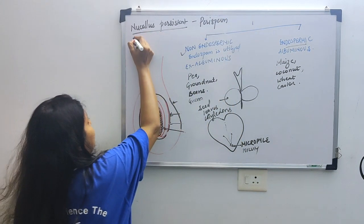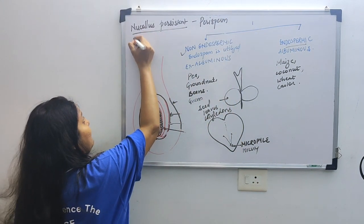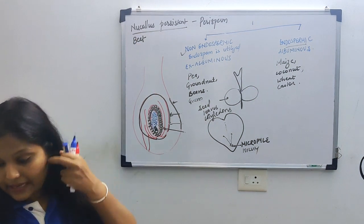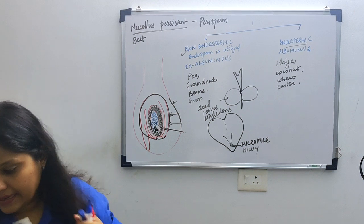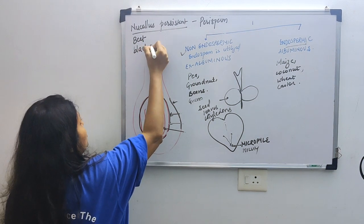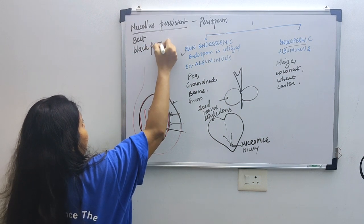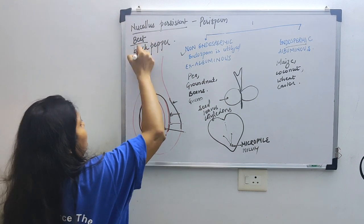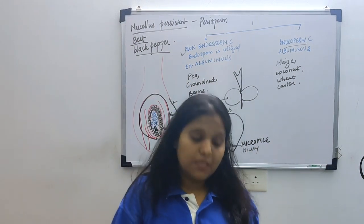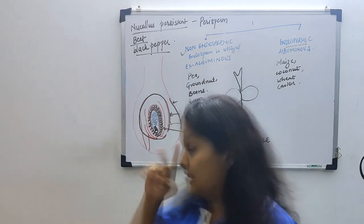Some seeds have a persistent nucellus which is called as perisperm. Examples of perisperm include our beet and black pepper. So we have beet and black pepper seeds which have perisperm.